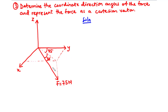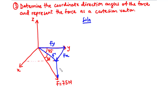We will use these angles to find the rectangular components of force F so we can represent it as a Cartesian vector, then find the coordinate direction angles alpha, beta, and gamma. Given these two special angles, we first need to find F′ and Fz, where F′ is the resultant component vector of Fy and Fx. So F′ is the resultant of Fx and Fy. We use F′ to find Fx and Fy.